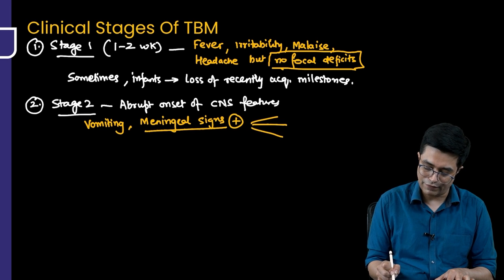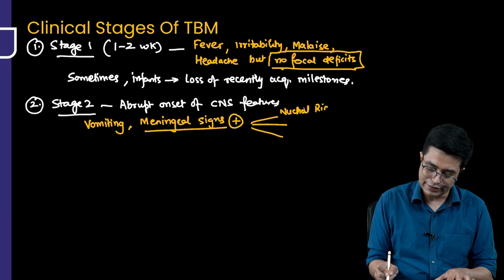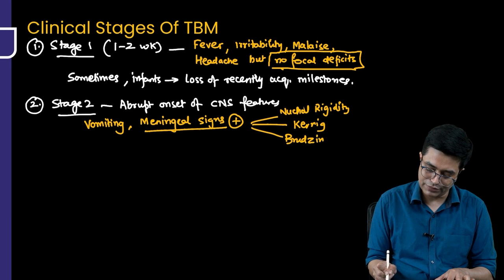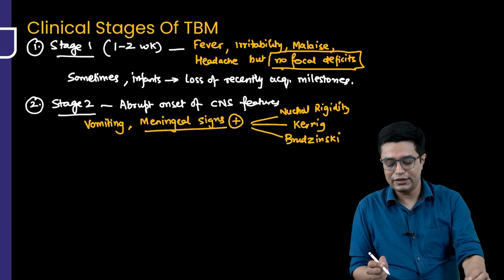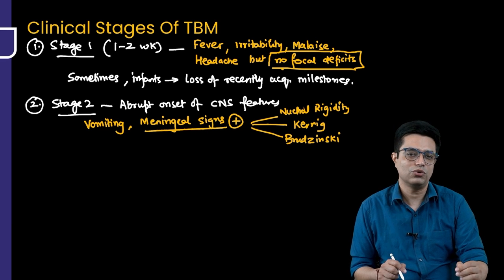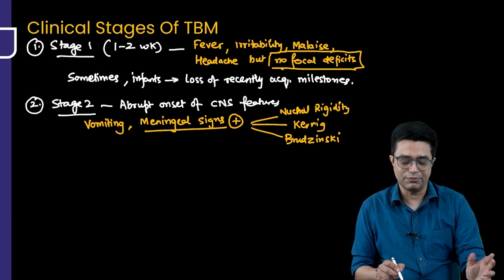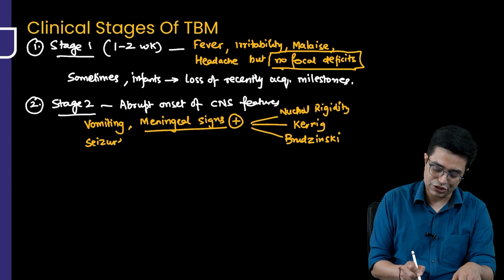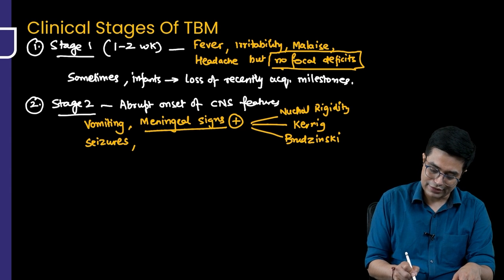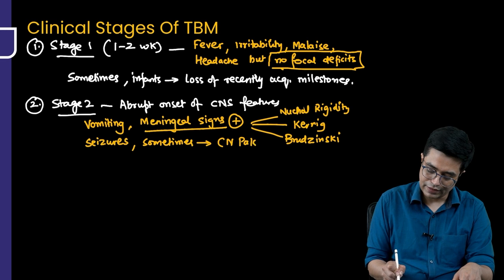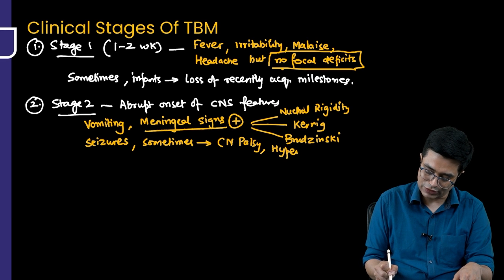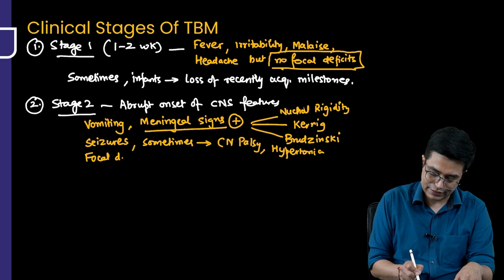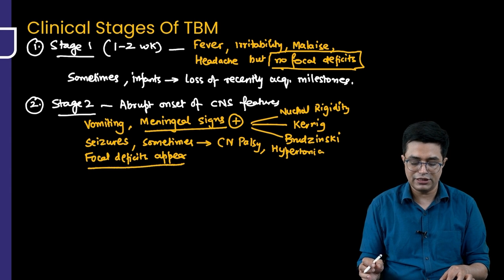What are the meningeal signs? Obviously, these patients will have nuchal rigidity, they will have Kernig sign and they will have Brzezinski sign. You know already from the other meningitis discussion that we had that Kernig Brzezinski sign will be absent below 18 to 24 months of age. But in an older child, these meningeal signs will be present. Children will also have seizures. Seizures will be present in some of these patients. Sometimes cranial nerve palsies can be seen, and some of these patients can have hypertonia as well. Focal neurological deficits appear in stage 2. If they ask what is the stage during which focal deficits appear, they appear in stage 2.